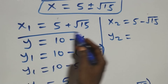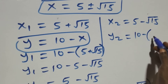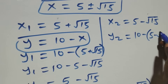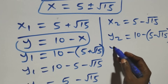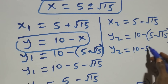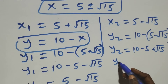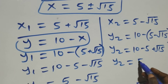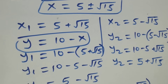For y₂, using the same relation, y₂ equals to ten minus x₂, which is ten minus (five minus root fifteen). Opening the bracket: y₂ equals to ten minus five plus root fifteen, which gives y₂ equals to five plus root fifteen.